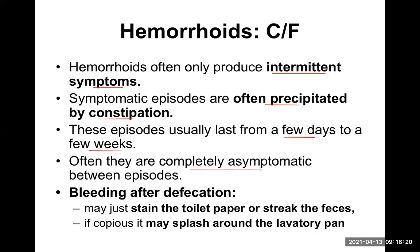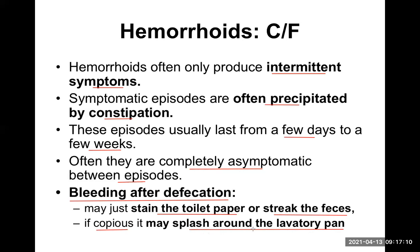Often patients are completely asymptomatic between episodes. The most important symptom when they present is bleeding after defecation — it may stain the toilet paper or streak the surface of the fecal matter, which is usually hard. Sometimes, if the bleeding is copious, it may splash around the lavatory pan. These are very typical features of hemorrhoid.